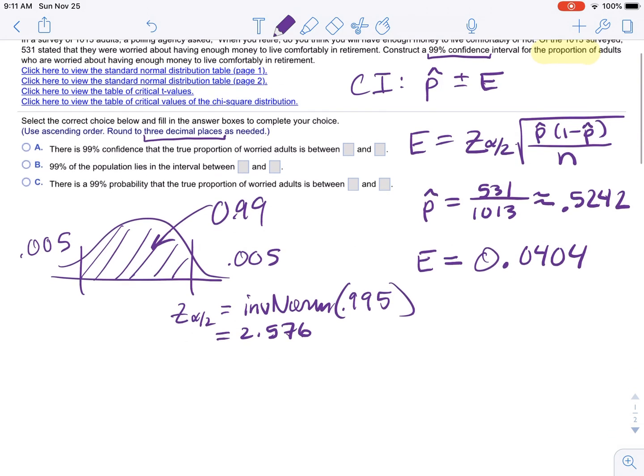I can go ahead and break it down to 3 because that's the answer they want. So our confidence interval is going to be 0.5242 plus or minus 0.0404.